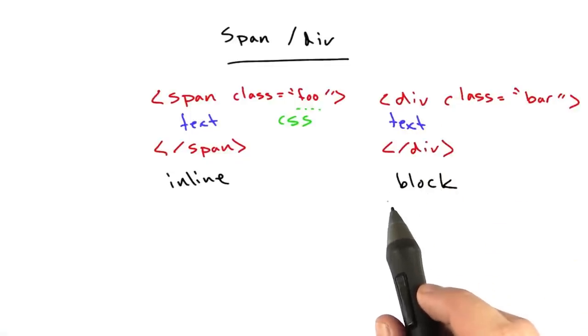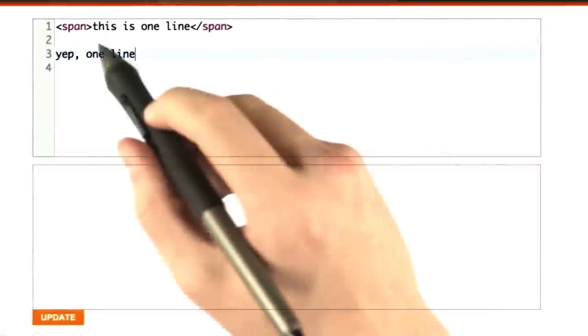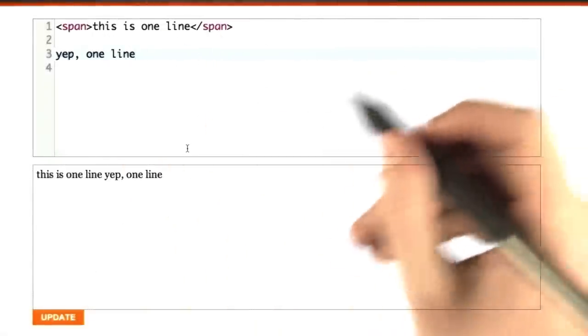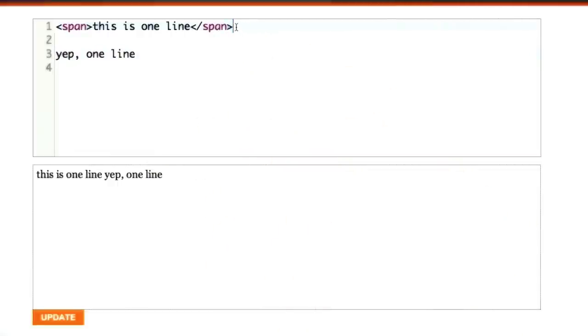Let's play around with these in the browser a little bit real quick so you can see what I'm talking about. Okay, so we've got our text, and our first line is wrapped in span. And it behaves as we would expect an inline element to behave.